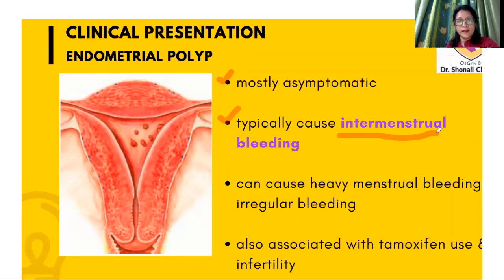What is intermenstrual bleeding? The woman will have her normal menses as usual but somewhere in between, off and on, she can have a few days of bleeding. These endometrial polyps — these polypoidal growths — can have ulceration on their surface, inflammation, infection. So they are prone to bleeding in between menses, and that is why they typically cause intermenstrual bleeding.